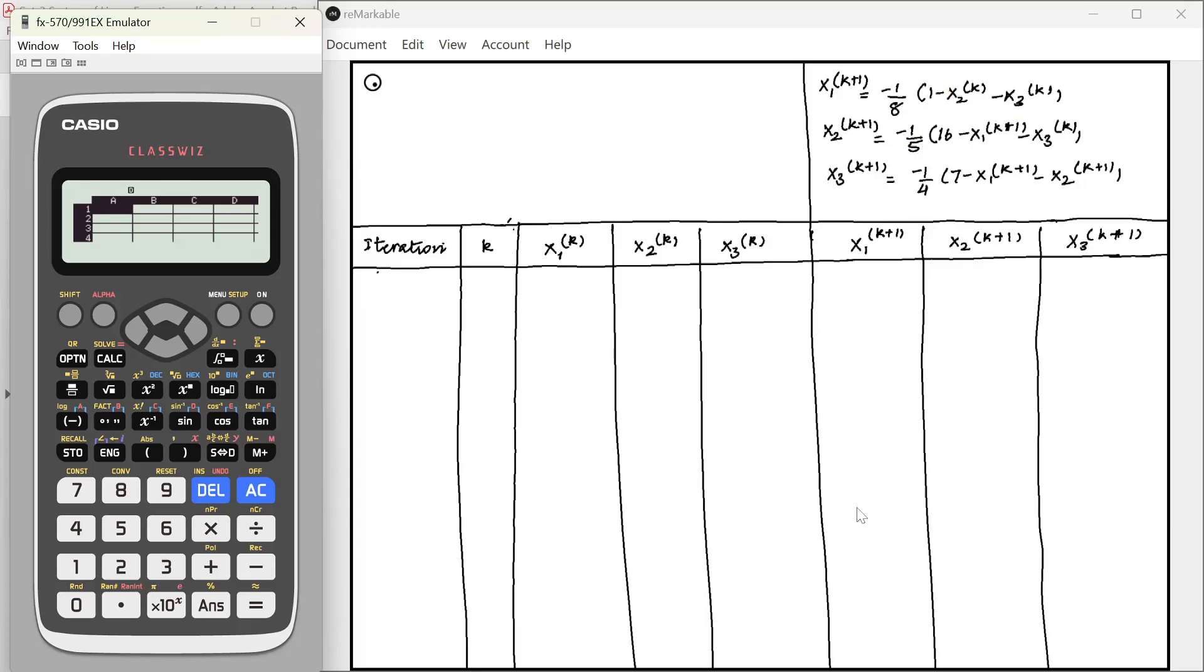Initially for iteration 1, k is 0, x1, x2, x3 are equal to 0 at the start. We are going to mention the same in the first column of our calculator. x1 is 0, x2 is 0, x3 is 0.